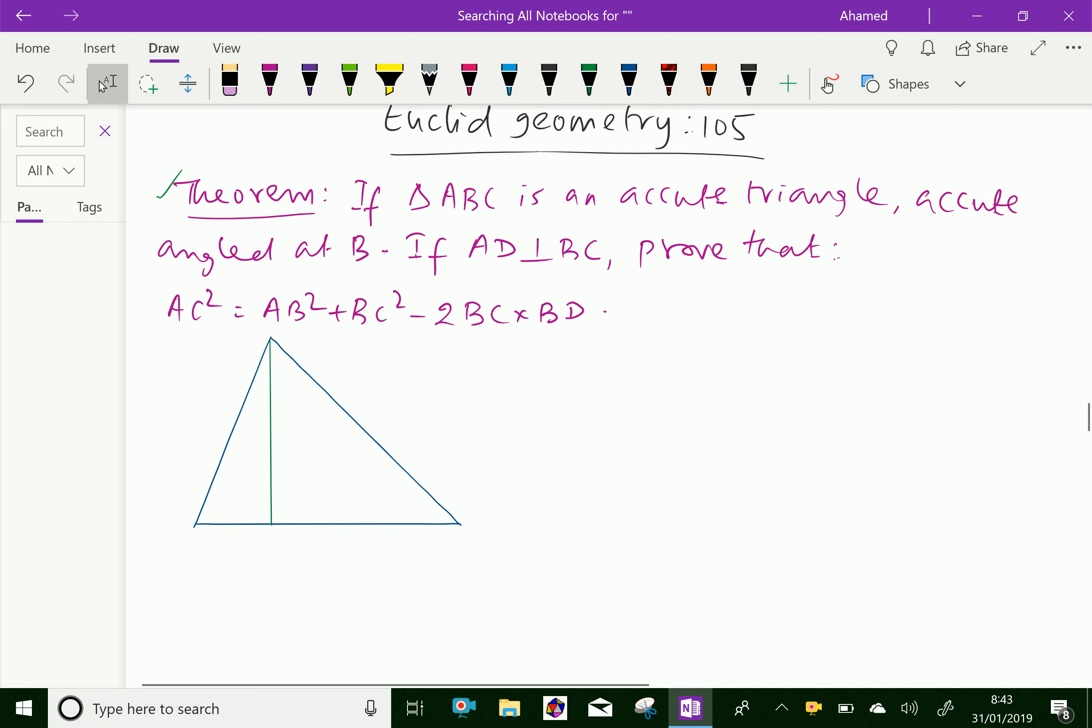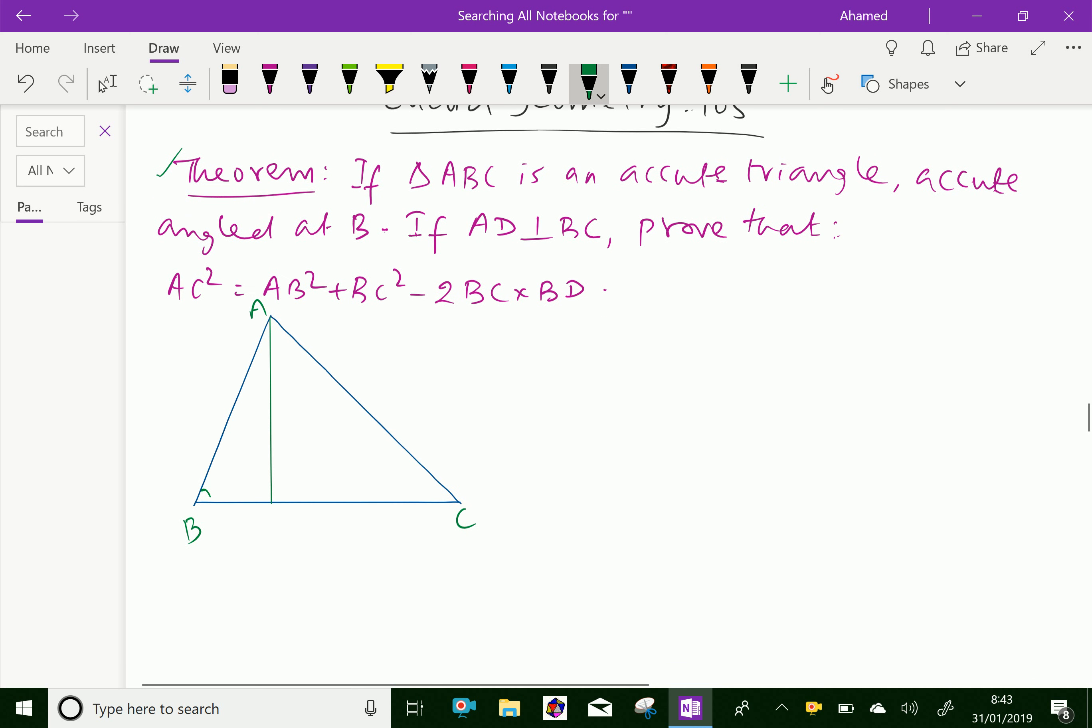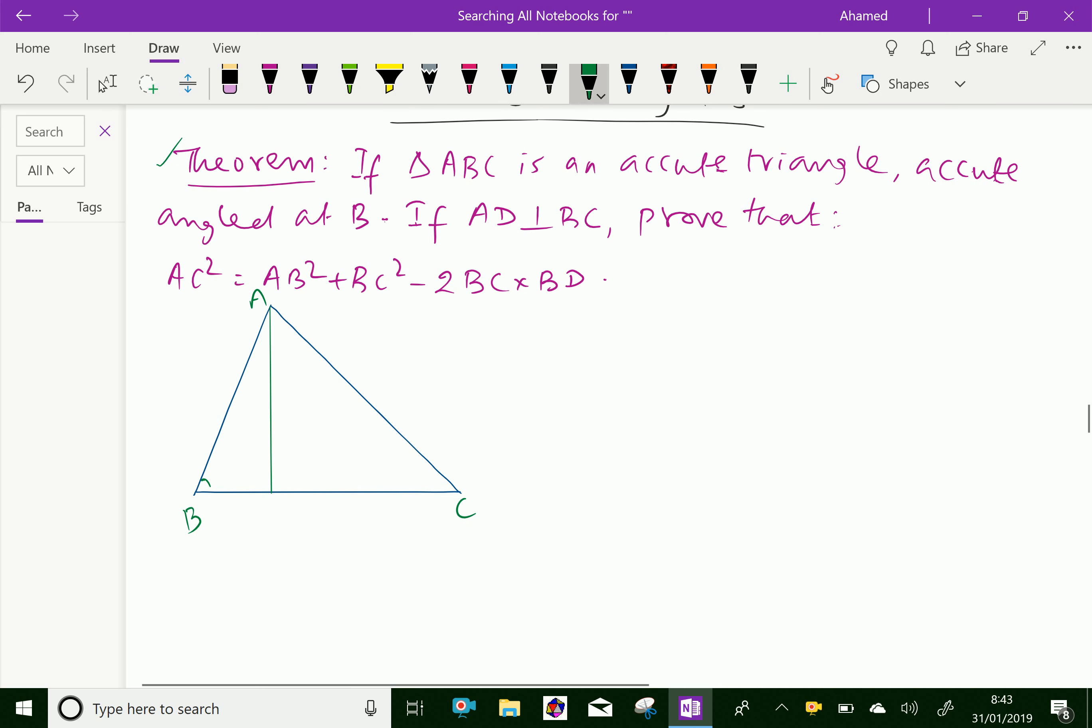Theorem: If triangle ABC is an acute triangle, acute angled at B, and if AD is perpendicular to BC, then prove that AC² = AB² + BC² - 2BC·BD.